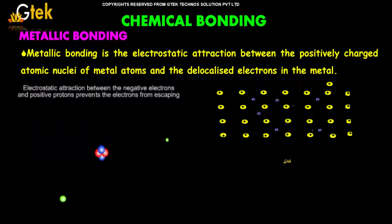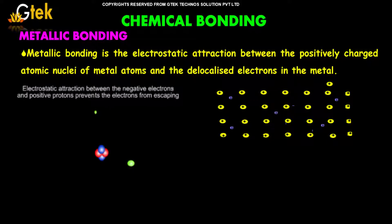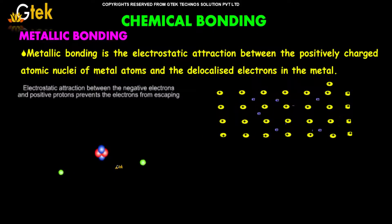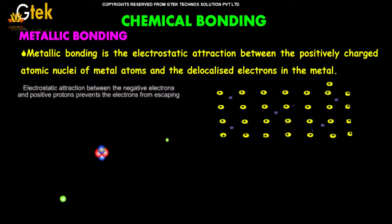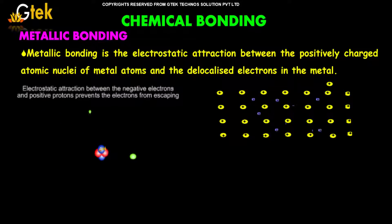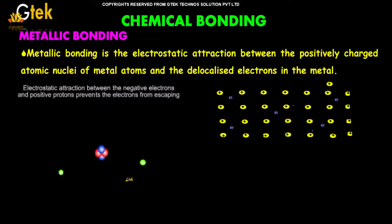Metallic bonding is the electrostatic attraction between the positively charged atomic nuclei of metal atoms and the delocalized electrons in the metal.